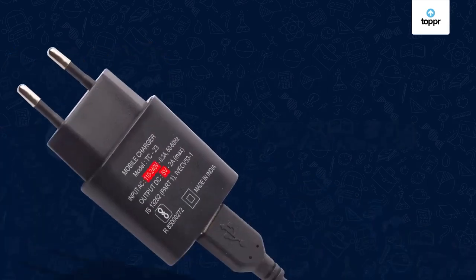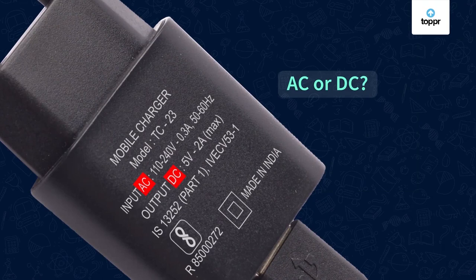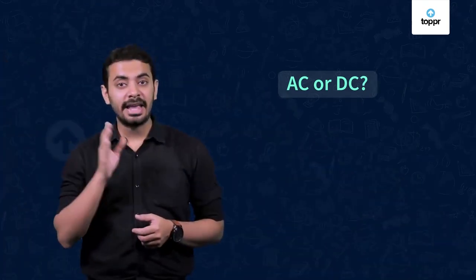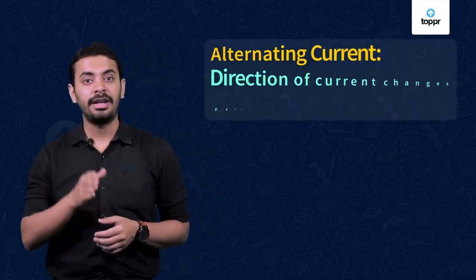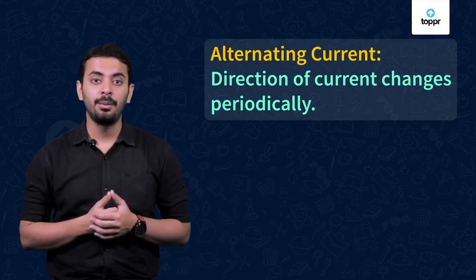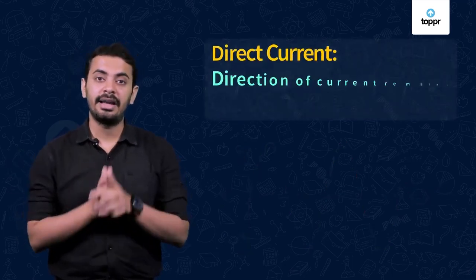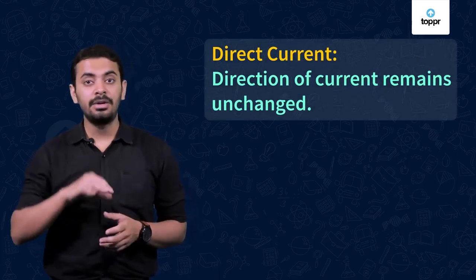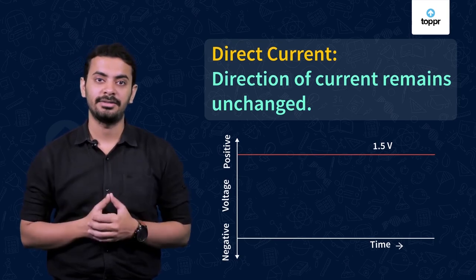These numbers refer to the potential difference across input and output. The two letters AC or DC indicate the type of current. AC stands for alternating current, where the direction of the current changes periodically, which is represented this way. DC stands for direct current, which means the current always flows in one direction, which is represented in this way.